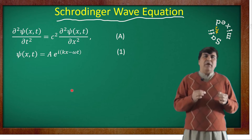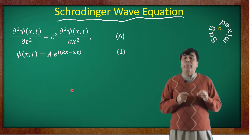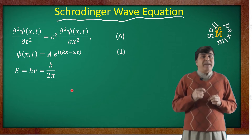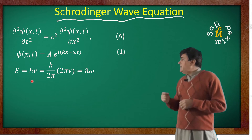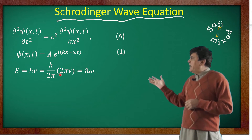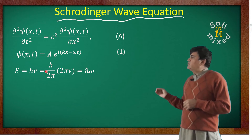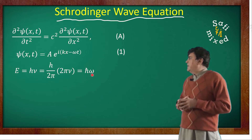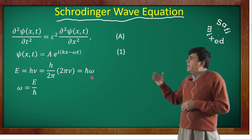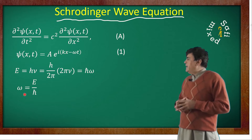Schrödinger thought that the particle behavior of the photon can be encoded into equation A by replacing the angular frequency Omega with energy through Einstein's equation for the energy of a photon: E equals h times nu. Multiplying and dividing by 2 pi, we get E over 2 pi times 2 pi nu, where h over 2 pi equals h-bar and 2 pi nu equals Omega. So we can write Omega equals E divided by h-bar — equation 2.